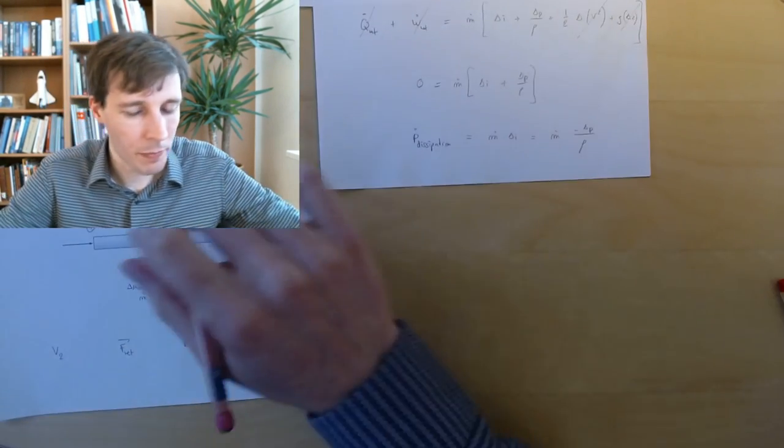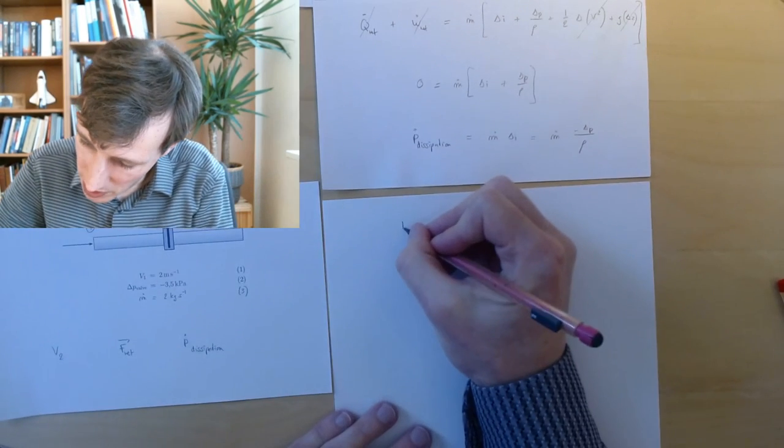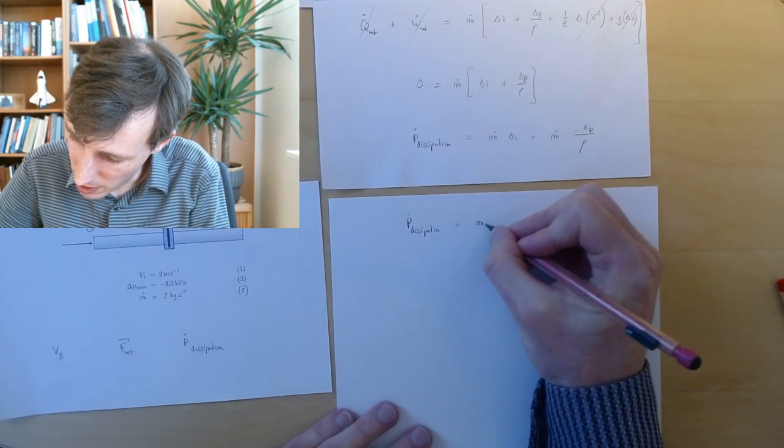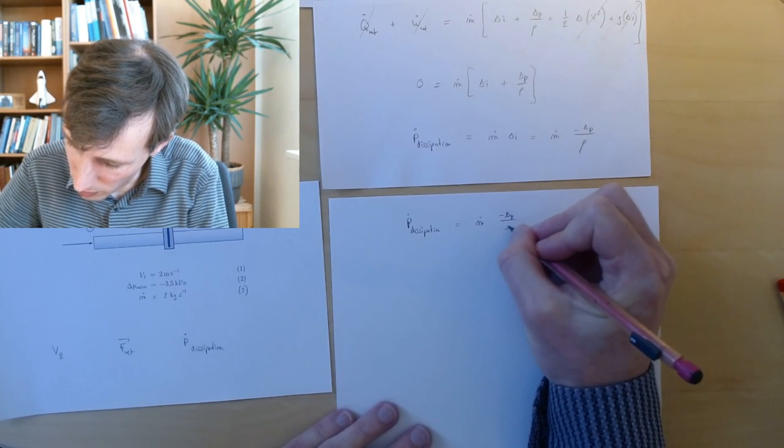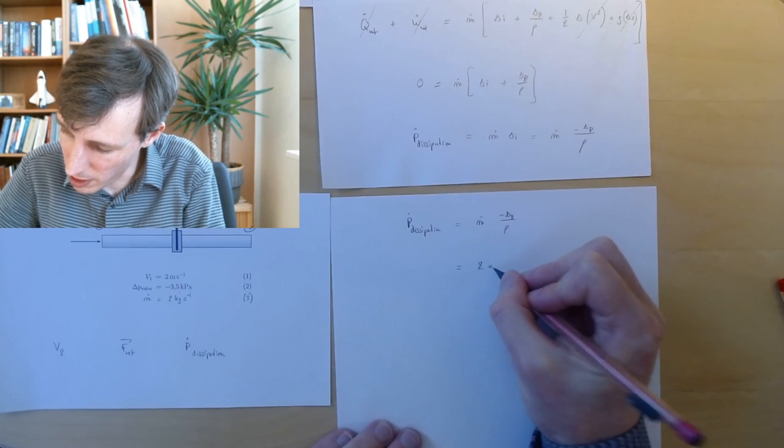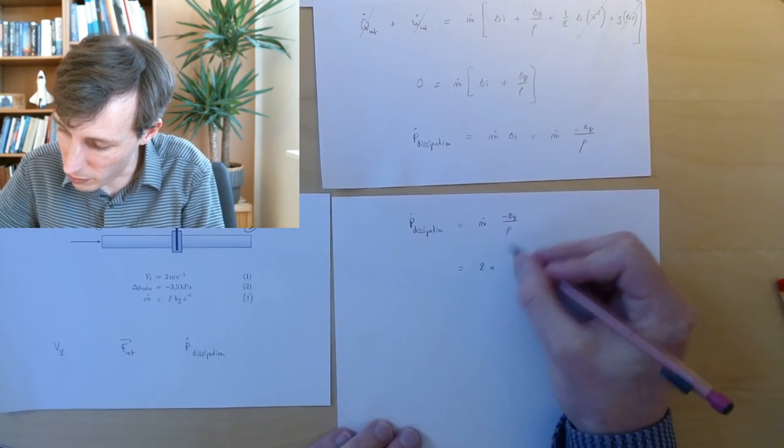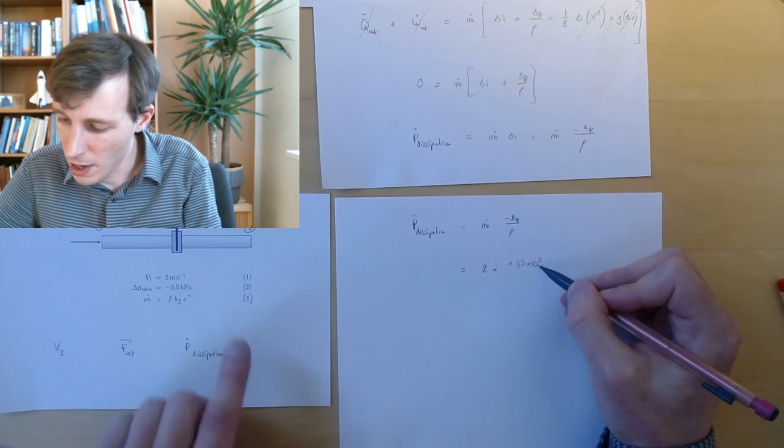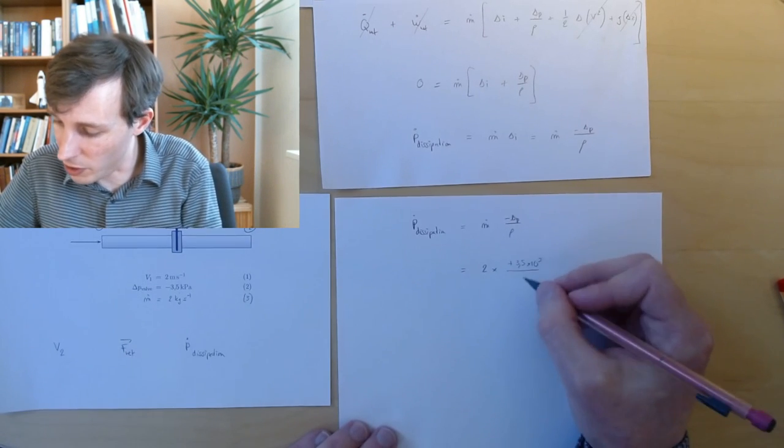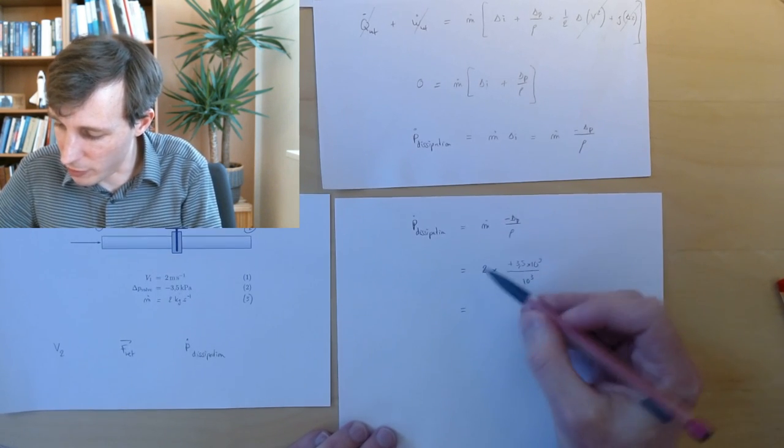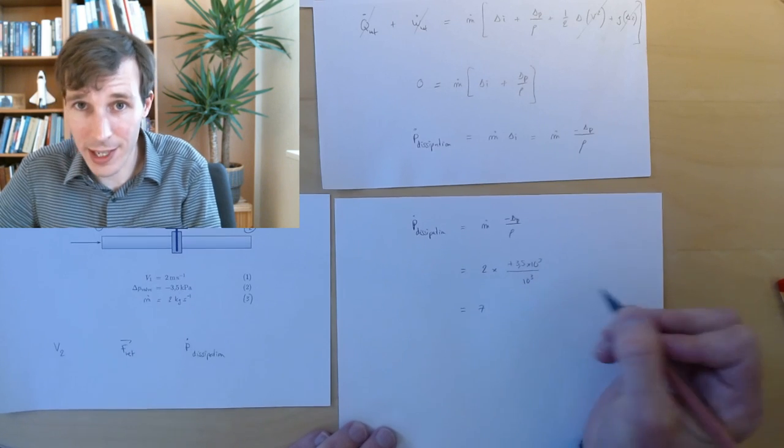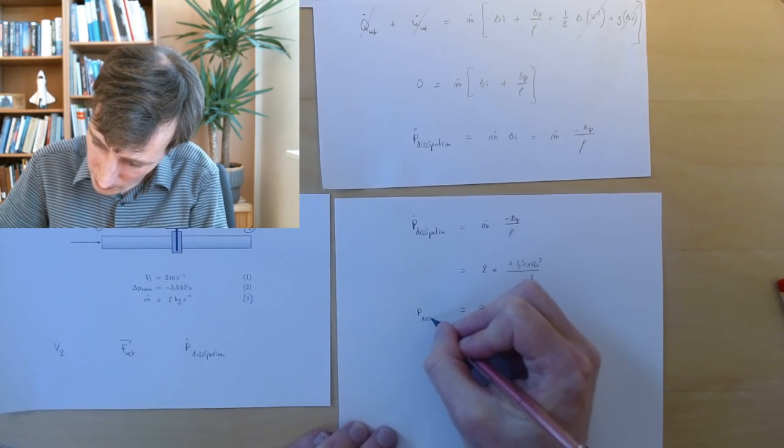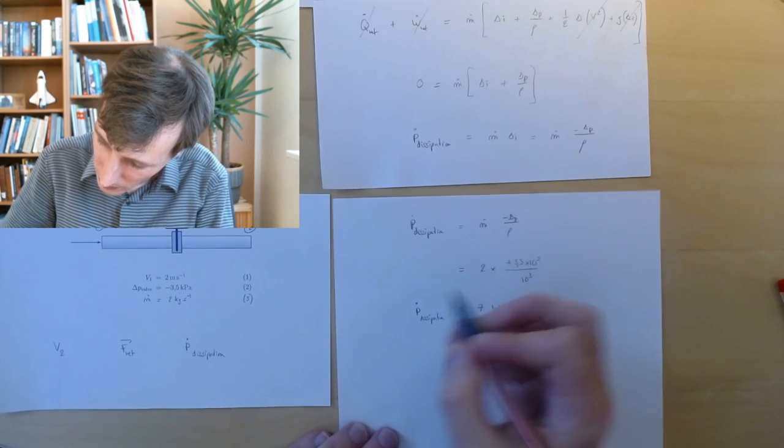Let's put numbers into this. P dissipation is M dot minus delta P over rho. M dot in this case is 2 kilograms per second. The delta P is minus 3.5, so minus delta P will be plus 3.5 times 10 to the power 3 because it's kilopascals, then divide by the density which is 1000 or 10 to the power 3. So I have 2 times 3.5, and this is 7 watts. Seven watts of power, that's not a lot of power. P dissipation.